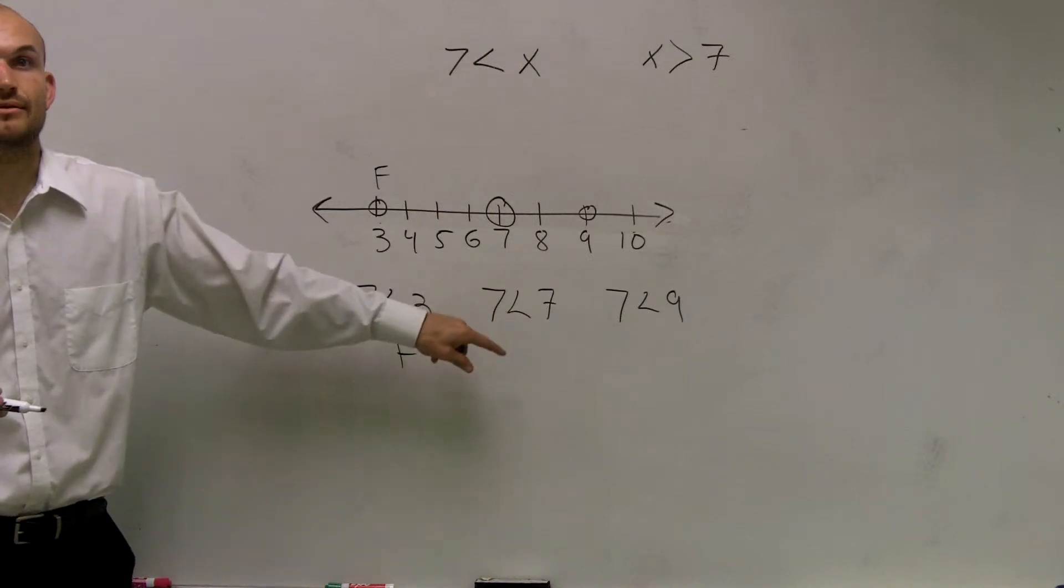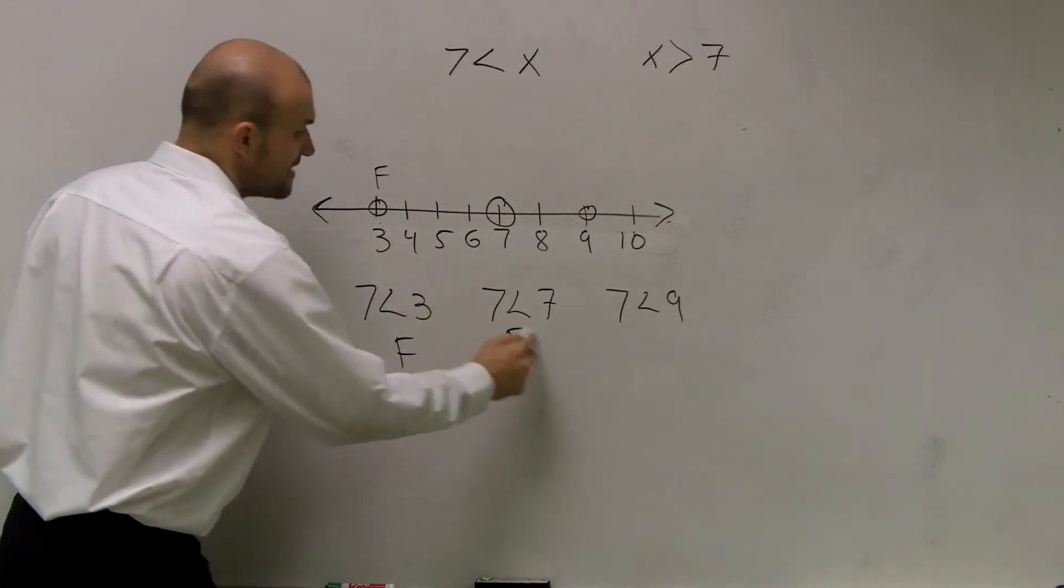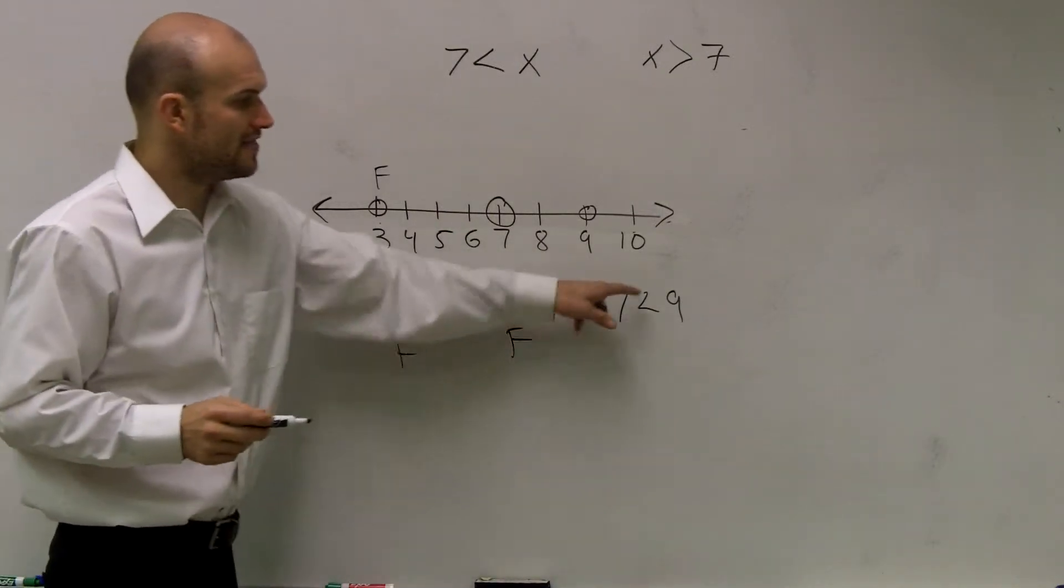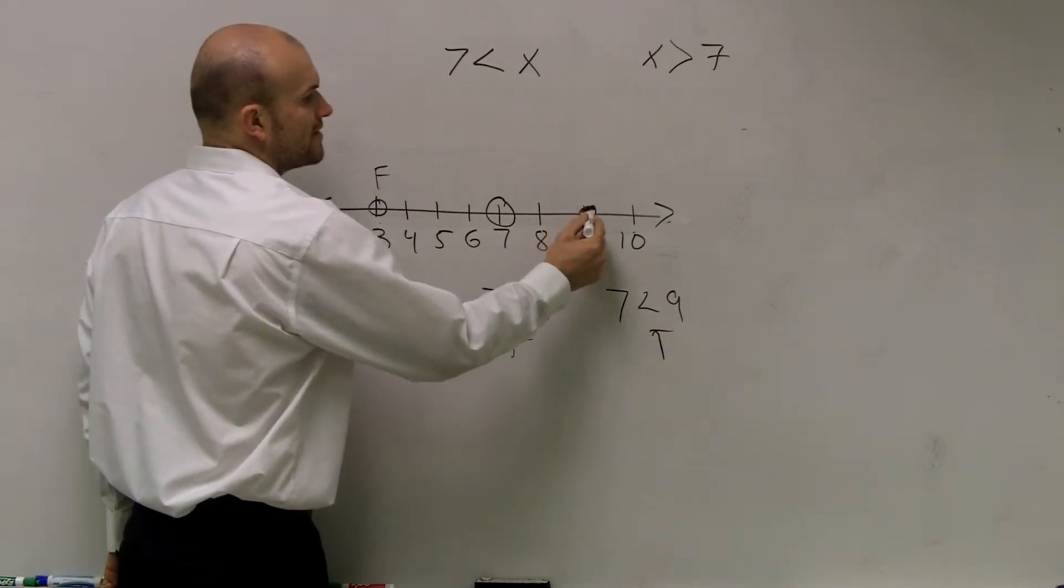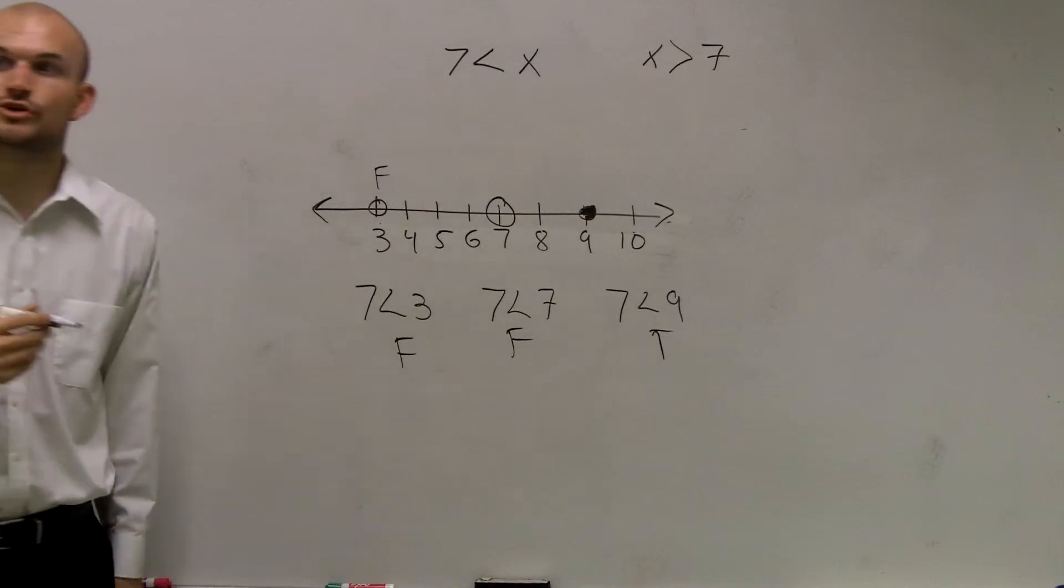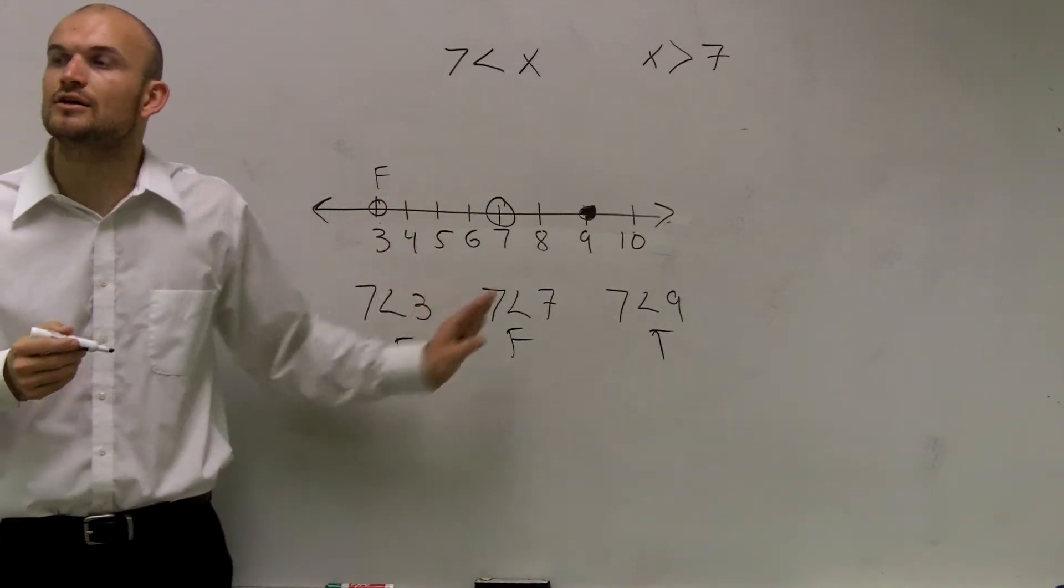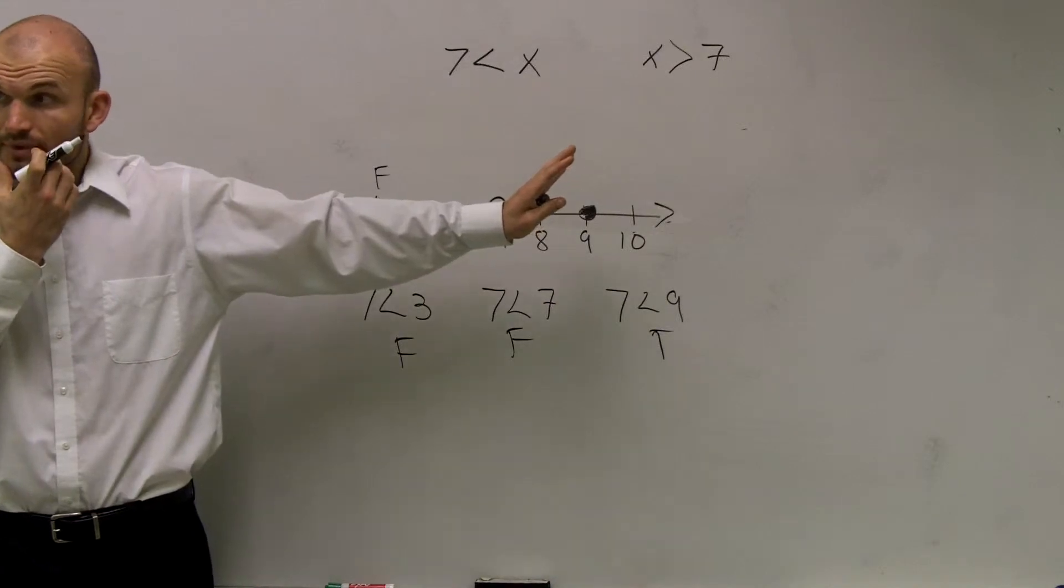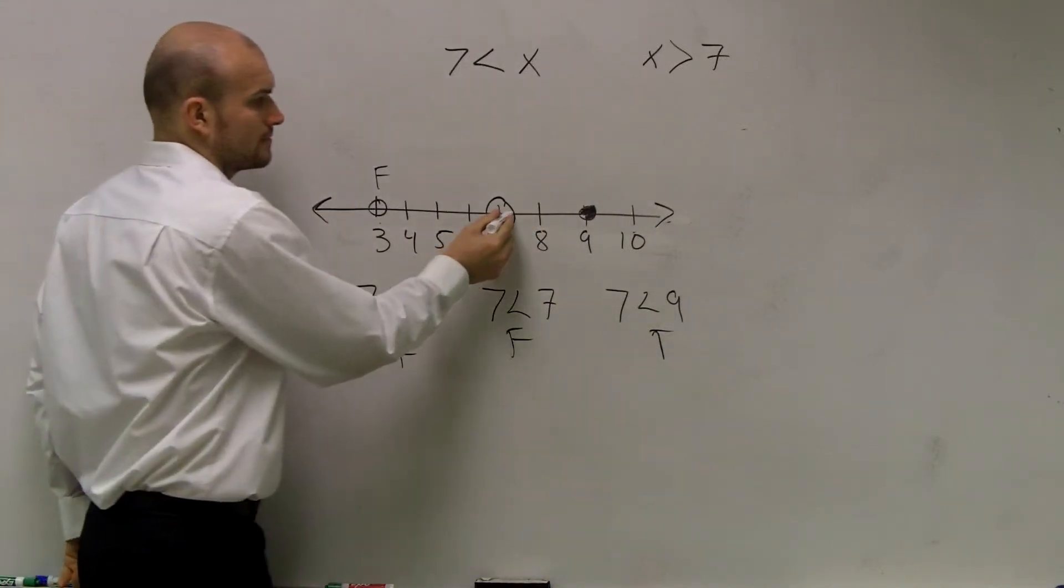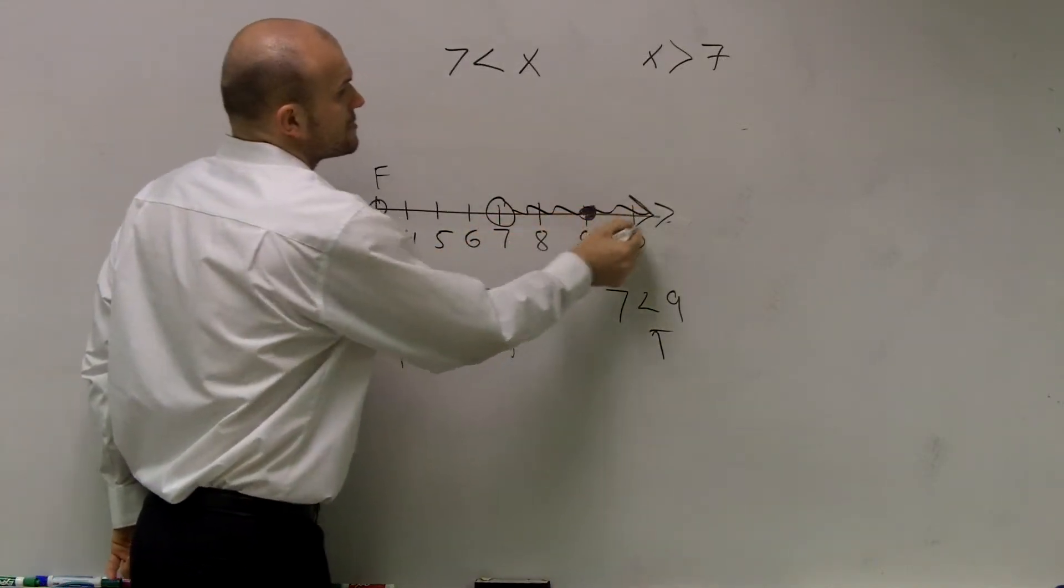Is 7 less than 7? No, false. 7 is equal to 7. And then we also know, is 7 less than 9? True. So therefore, that is going to be true. And remember, we always shade towards our true statements.